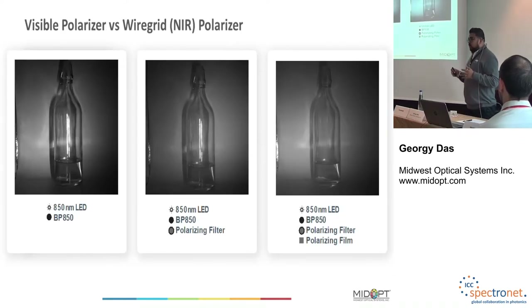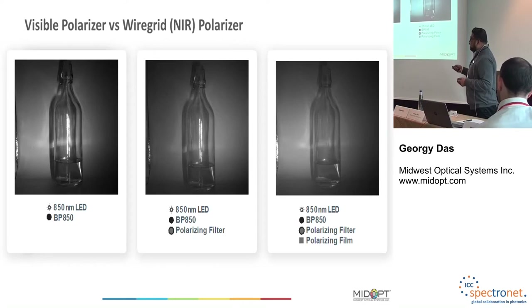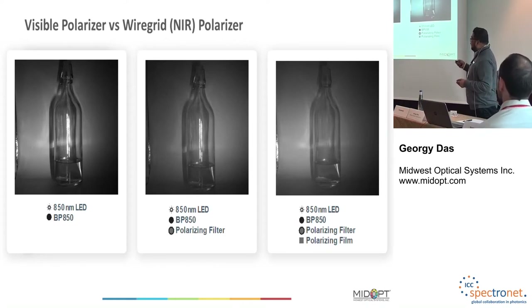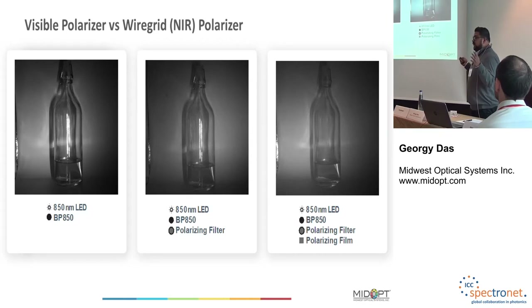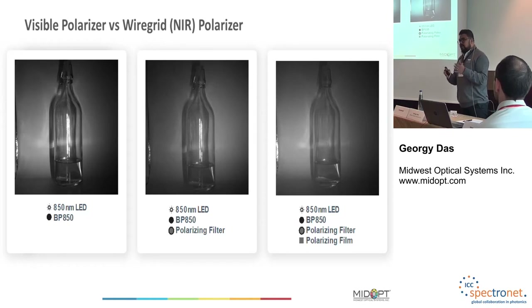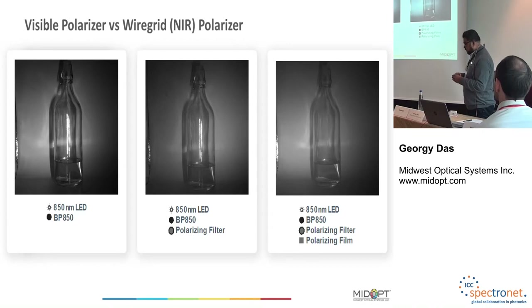If you're using infrared lighting — here an 850 nanometer LED light source — you must use a wire grid polarizer. Polarizing just the lens shows little difference, but polarizing both lens and light source eliminates the glare. So if you have an issue with glare, polarizers are the way to go — and make sure you select the appropriate polarizer for your light source to most efficiently reduce glare.